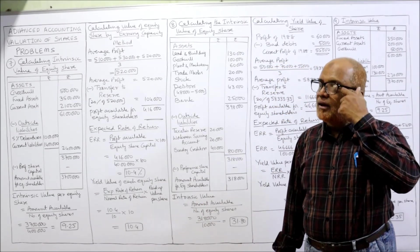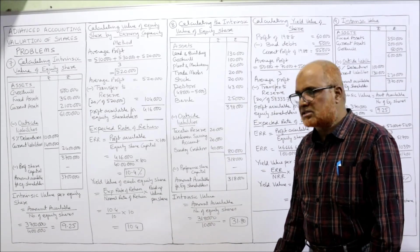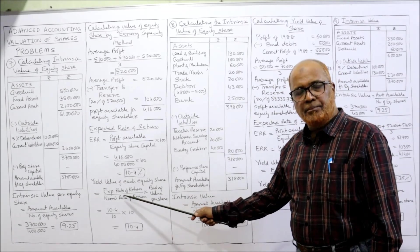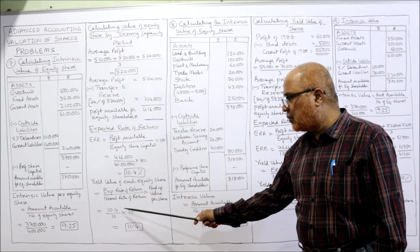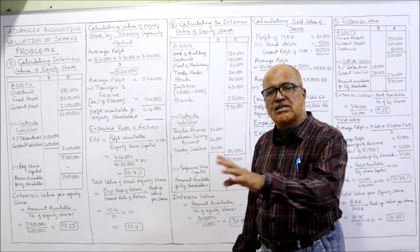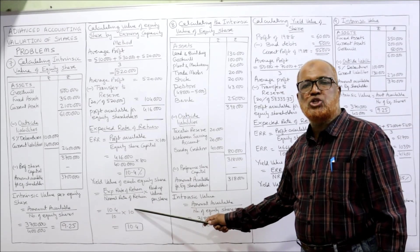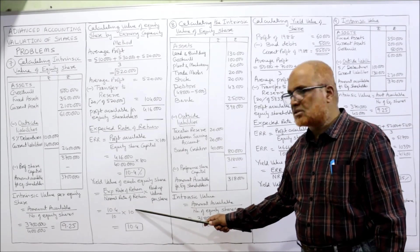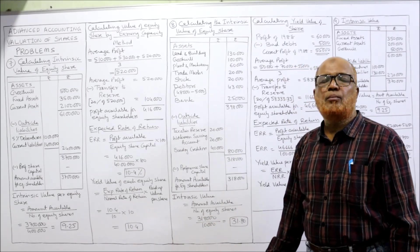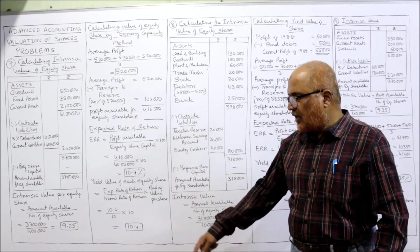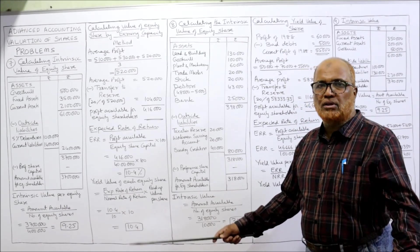Expected rate of return: 10.4%. Now the formula to calculate yield value by earning capacity method is ERR ÷ NRR × paid-up value per share. ERR = 10.4, NRR (given in the problem) = 10%, paid-up value per share = Rs. 10. So the 10s cancel, and ultimately 10.4 is the yield value. Intrinsic value: 9.25. Yield value: 10.4. That's all.